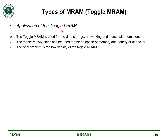Let's talk about the applications of Toggle MRAM. MRAM is generally used for data storage, networking, and industrial automation. Toggle MRAM is also used for memory and battery or capacitor applications. However, the problem with MRAM is that it has a low density, and hence cannot replicate the behavior of dynamic RAM, which is the foremost requirement for any MRAM in development.